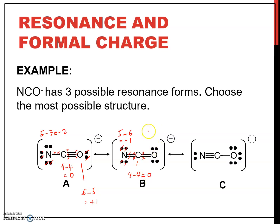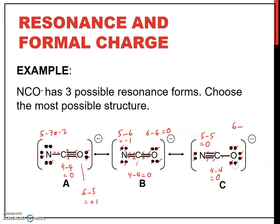For oxygen in structure B: 6 valence electrons minus 1, 2, 3, 4, 5, 6 owned electrons, so 6 minus 6 is 0. Wait — checking again: 6 minus 6 is 0. For structure C, nitrogen: 5 valence electrons minus 1, 2, 3, 4, 5 owned electrons gives 5 minus 5 is 0. For oxygen in structure C: 6 minus 1, 2, 3, 4, 5, 6, 7 gives 6 minus 7 equals negative 1.